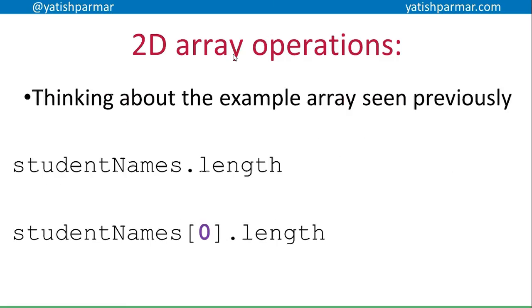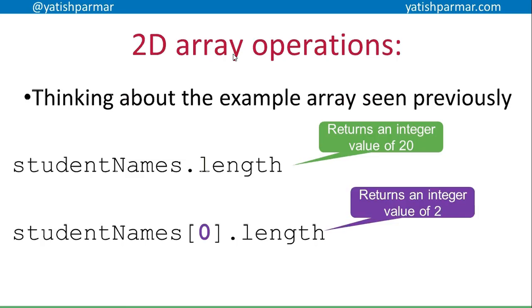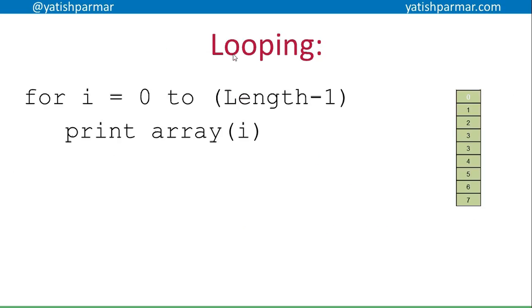So with that array `studentNames[20][2]`, if I do `studentNames.length` I get 20, because that's how many rows I put in.